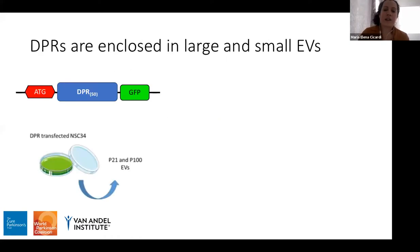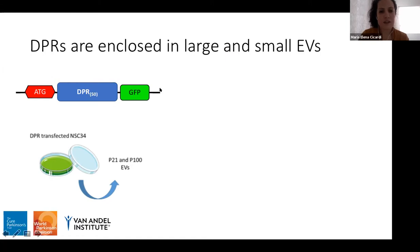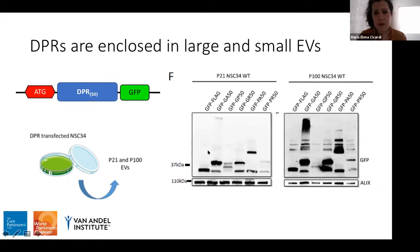To understand which EV population contains DPRs, we transfected NSC34 cells with codon-optimized constructs where each DPR's translation is ATG-driven and each is tagged with GFP. We transfected with each of the five different DPRs individually, then extracted P21 and P100 pellets. By Western blot, both P21 and P100 populations were found positive for all five DPRs. However, Western blot alone doesn't tell us whether the DPRs are actually enclosed within the EVs.